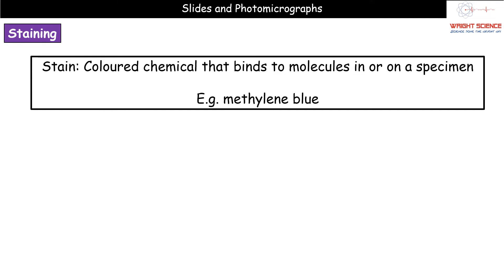We also have the option of staining. Sometimes we will use a stain to make things a bit clearer. A stain is a coloured chemical that binds to a molecule in or on a specimen. One you should have used lower down the school would have been methylene blue — for example, if you took slides of your cheek cells, you'd add methylene blue to see those features more clearly.